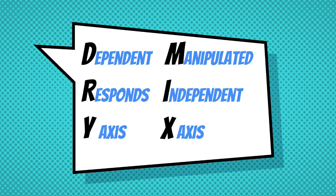Before the practice questions, let's review the mnemonic DRY-MIX. DRY stands for Dependent Response Y-axis. The dependent variable is the thing we're measuring, and we expect it to respond to the thing we've changed intentionally — our independent variable. The independent variable is manipulated or changed by the experimenter. Remember, the dependent variable is always plotted on the y-axis, while the independent variable goes on the x-axis.